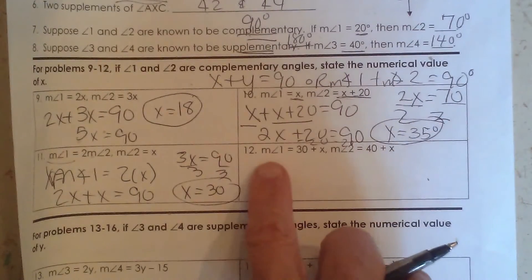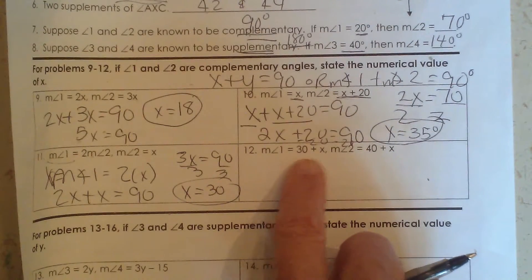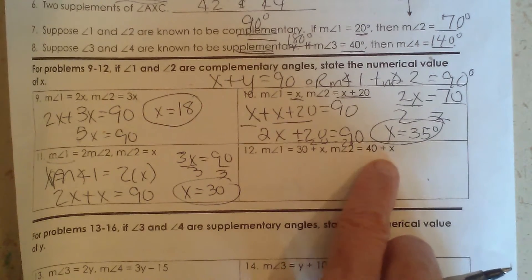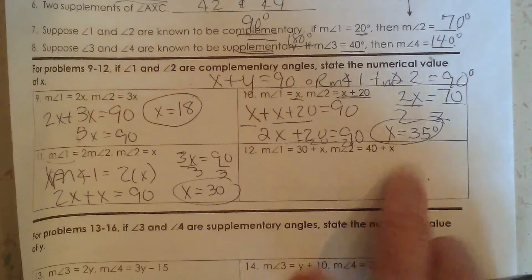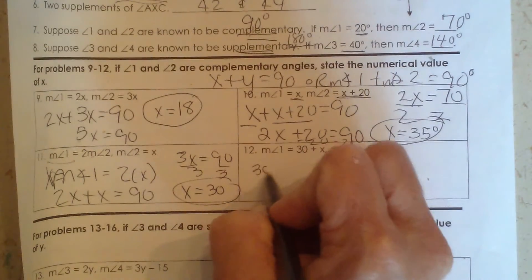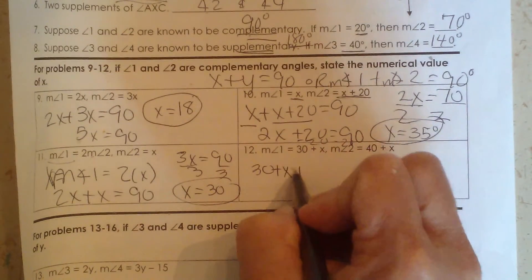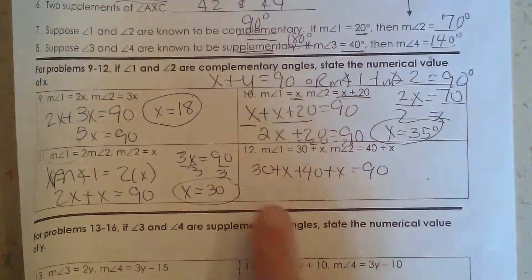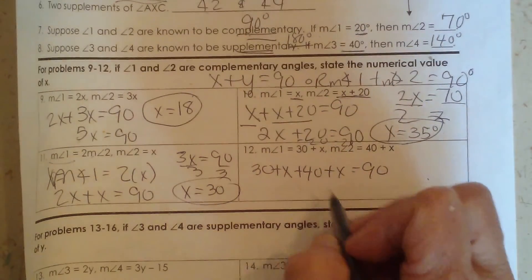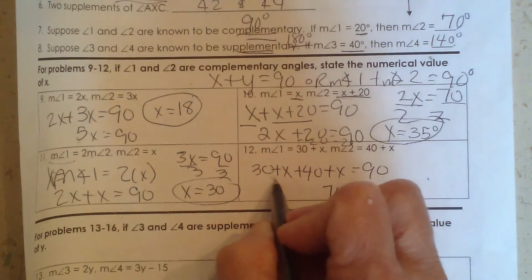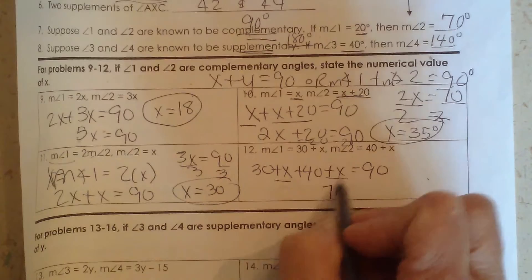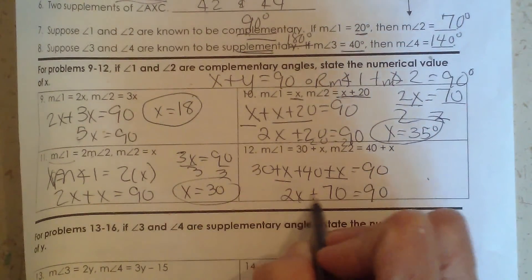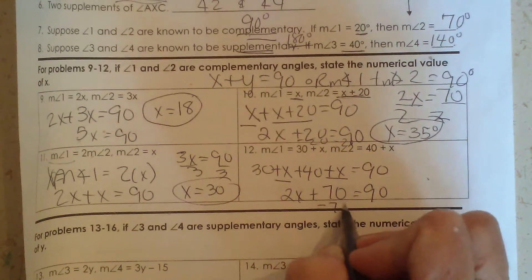Okay, let's look at this last one. The measure of angle 1 is 30 plus x. The measure of angle 2 is 40 plus x. We know they're complementary. So at this point, we know we're going to add them up to 90 degrees. Now let's add our like terms. 30 plus 40, that's 70. x plus x, that's going to add to 2x. So 2x plus 70 is equal to 90. Let's subtract 70.